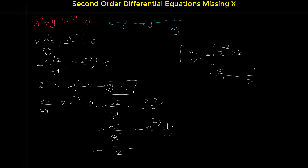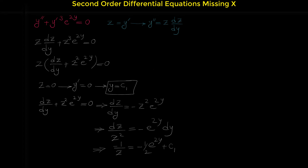The integral of e to the 2y is e to the 2y, but because of the 2 in the exponent, we place a one-half in front. We add a constant to the right side. Now if we multiply both sides by negative, we have 1 over z equals one-half e to the 2y minus c₁. From this relation, z equals 1 over the quantity one-half e to the 2y minus c₁.